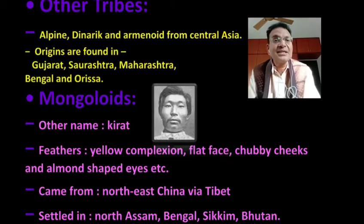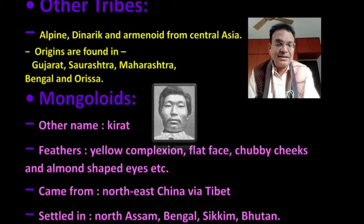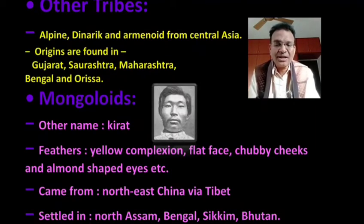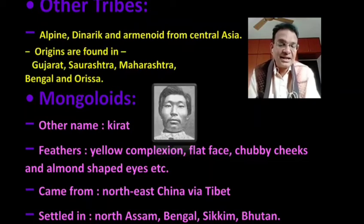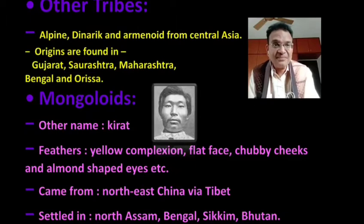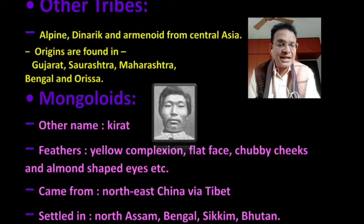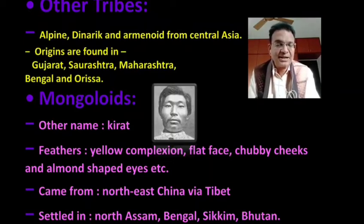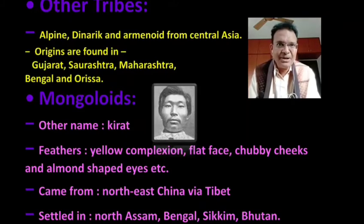Another one of the most important tribes is the Mongoloid. Mongoloid's other name by which they were recognized was Kirat. It is believed that they came to India from North China via Tibet and settled down at North Assam, Sikkim, Bhutan and West Bengal. Whenever we visit these states, their faces will resemble Chinese or Tibetan people. Mongoloid people possessed physical characteristics like yellow complexion, flat face, chubby cheeks and almond shaped eyes.